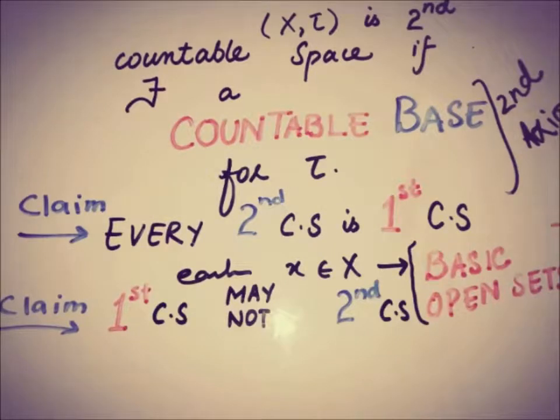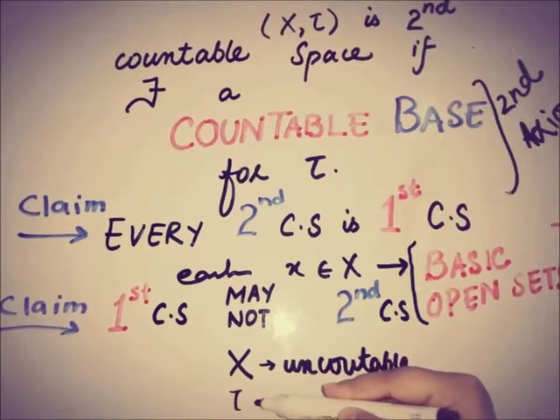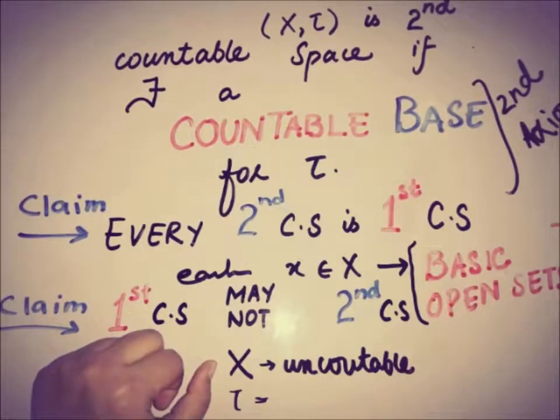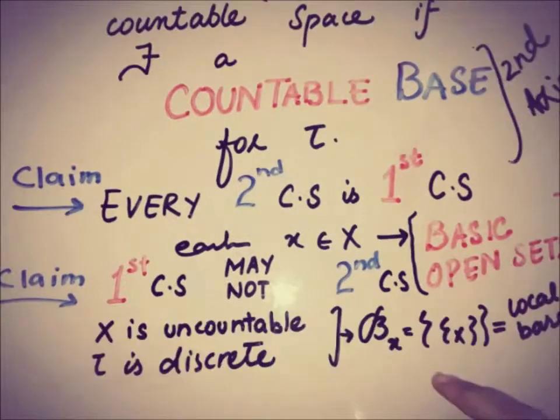on the other hand, a first countable space may not be a second countable space. The counter example in favor of this claim is: we have taken the discrete topology on X. For each element of X there is a local base of the form Bₓ which is countable, but there is no countable base for the discrete topology on X by definition.